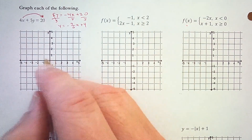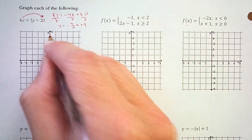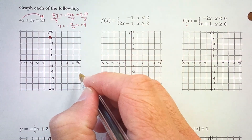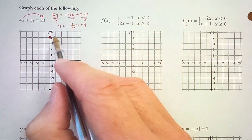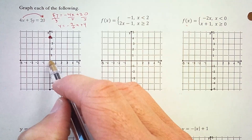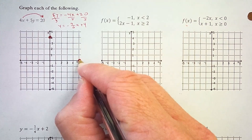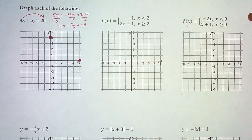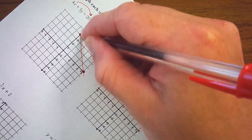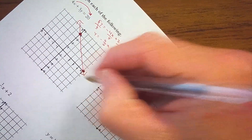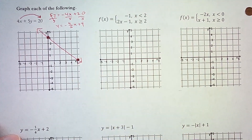The y-intercept is 4, so we'll plot a point at 4 on the y-axis. The slope is negative 4 fifths, so this line should be falling — it goes down 4 and right 5. We want to put as many points on the graph as we can, so we'll stop at those two points and make sure we put arrows on both ends because a line continues forever in two directions.